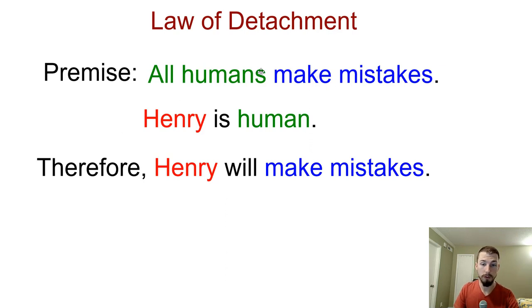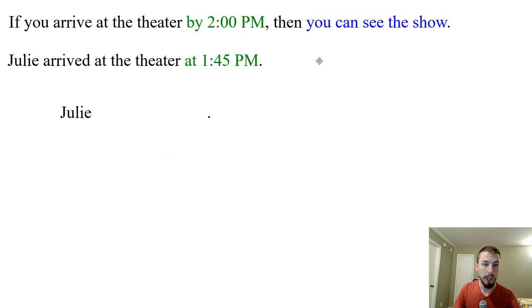So if P is true means Q is true. And we know that Henry is P. So then Henry also must be Q. Q must happen as well. Law of detachment. Let's do another example. If you arrive at the theater by two o'clock, then you can see the show. Julie arrives at the theater at 1:45, meaning she arrived by two o'clock before two o'clock. So what can we conclude? That Julie can see the show, because she arrived before two o'clock.